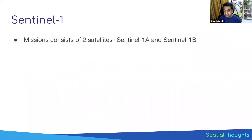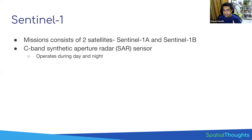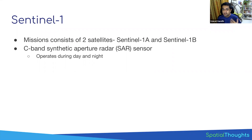The Sentinel-1 mission consists of two satellites, Sentinel-1A and 1B. They operate an instrument called C-band Synthetic Aperture Radar. A key feature is that it can operate both day and night, which is why you will see this data captured in both ascending and descending mode. That means it's capturing data as it goes up in the orbit, and also during the descending orbit.